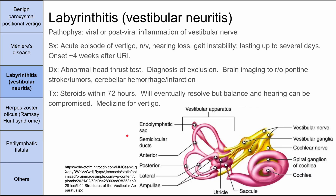Next is labyrinthitis. The pathophysiology is inflammation of the vestibular nerve — part of cranial nerve 8 — usually as a viral or post-viral process. A patient might describe having an upper respiratory infection two to four weeks ago. They'll have an acute episode of vertigo, nausea, vomiting, hearing loss, and gait instability lasting up to several days. Labyrinthitis, also called vestibular neuritis, can be identified with an abnormal head thrust test. It's usually a diagnosis of exclusion, so brain imaging should rule out pontine stroke, tumors, or cerebellar hemorrhage or infarction first.